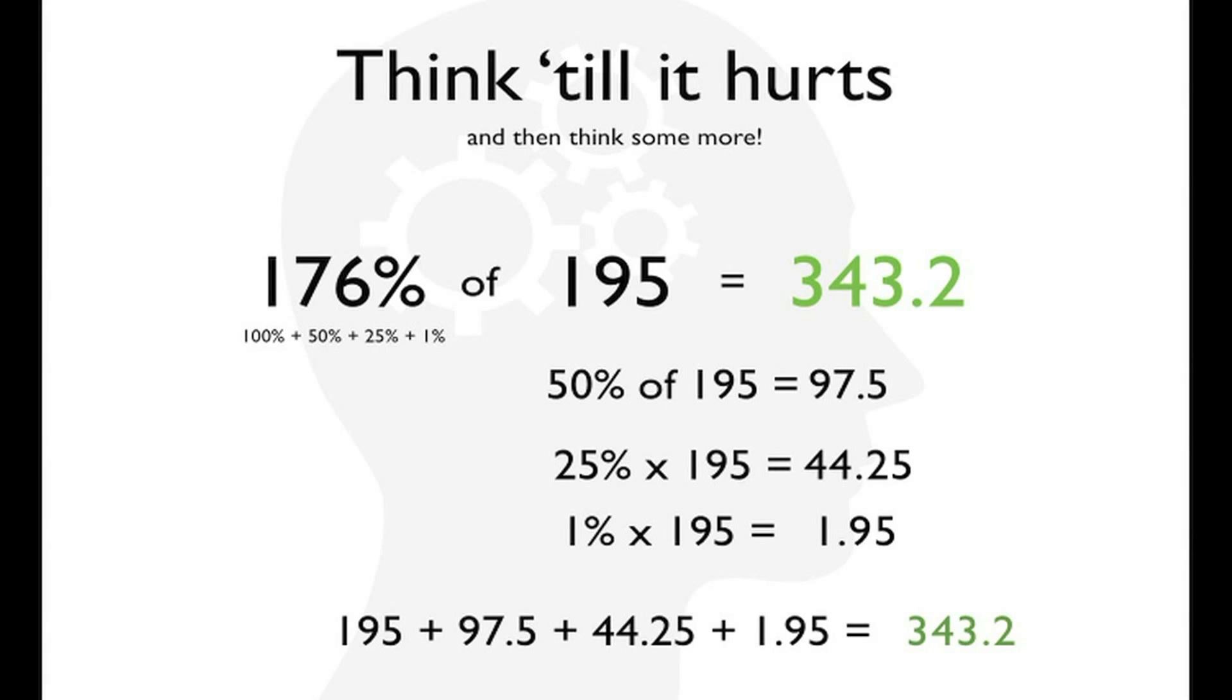We know that's the correct answer, or we have a hint of that, because when we multiply 176% of 195, we're expecting a number bigger than 195. Remember, there are more ways to solve this problem. Maybe, come up with a few on your own, and give them a try.